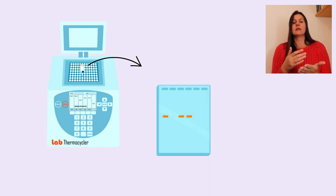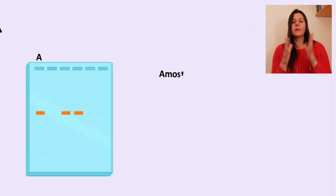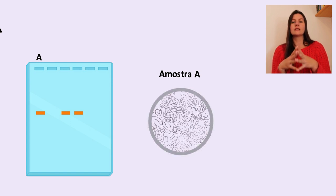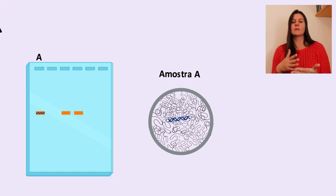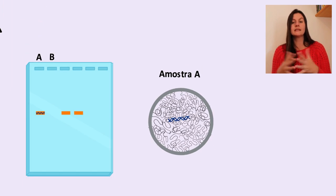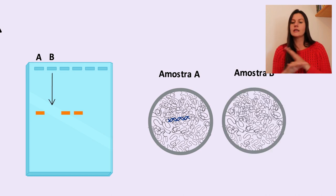Então, se tem uma banda, isso significa que os primers reconheceram por complementariedade uma porção do DNA na amostra, sendo que eles são sempre específicos para o que se quer amplificar. No caso da detecção de um vírus, os primers encontram e amplificam seu material genético e uma banda é detectada. Se não apareceu banda, significa que os primers não encontraram a porção de DNA equivalente, não houve amplificação, sendo o teste negativo.